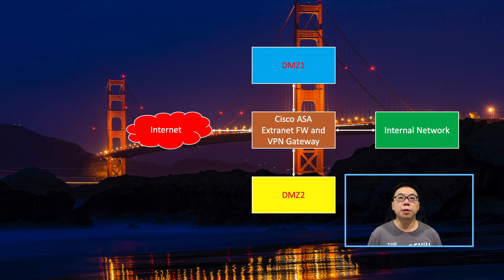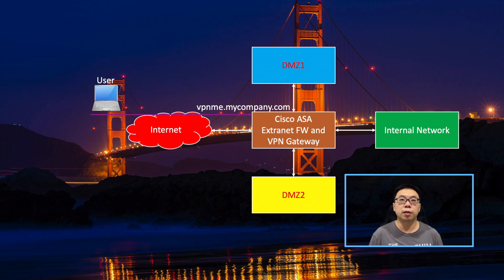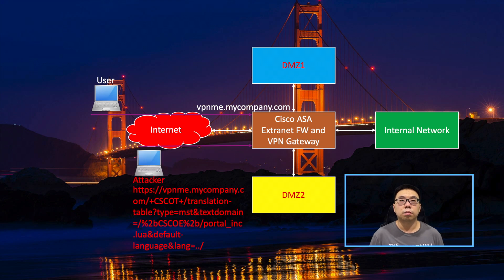Here is the typical network topology showing where Cisco ASA is located and becomes a vulnerable host. For example, your Cisco ASA functions as an extranet firewall and VPN gateway, directly connected to your internet router, DMZ zones, and internal network. Since it functions as a WebVPN gateway, you will publish the WebVPN portal — for example, vpnme.mycompany.com — for users to connect. An attacker who knows your VPN URL or public IP can use a directory traversal attack crafted into your WebVPN request to view files within your web services file system.